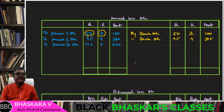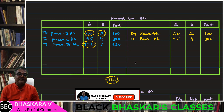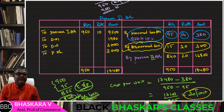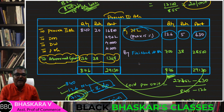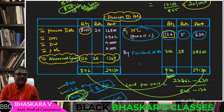This is Process 3 Account. Process 3 has 126 units. The 126 units come from Process 2 Account transferred into Process 3. You expect to get 126 units as output from Process 3.